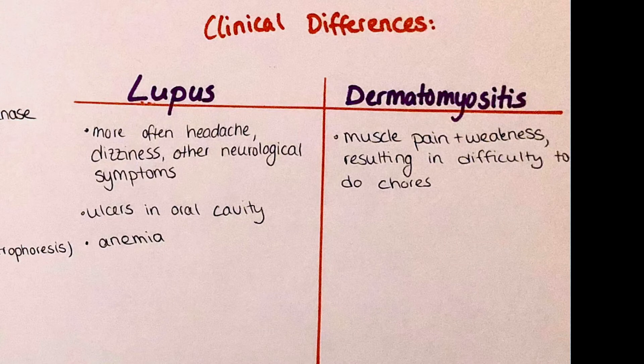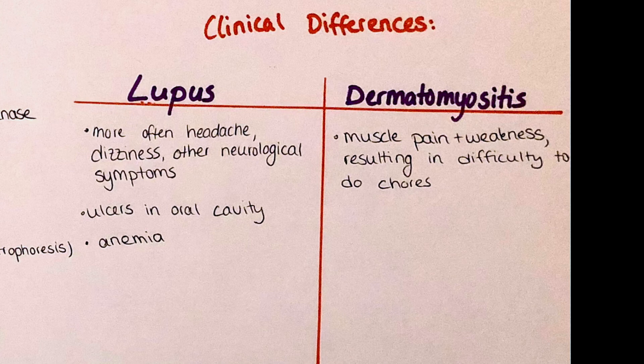Finally, I want to compare the clinical appearance of lupus erythematosus and dermatomyositis. Lupus erythematosus — the butterfly rash disease — presents more often with headache, dizziness, brain fog, and other neurological symptoms than dermatomyositis. Dermatomyositis, however, has some of these symptoms but more specifically presents with dysphagia.